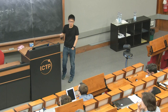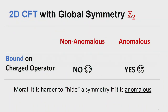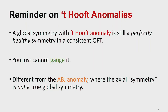The main take-home message is that the 't Hooft anomaly dramatically changes your bootstrap bound. A global symmetry with 't Hooft anomaly is still a perfectly healthy global symmetry in a consistent QFT — this is not to be confused with the ABJ anomaly, where the axial symmetry is not a true symmetry. A global symmetry with 't Hooft anomaly is healthy; it's just that you cannot gauge it.